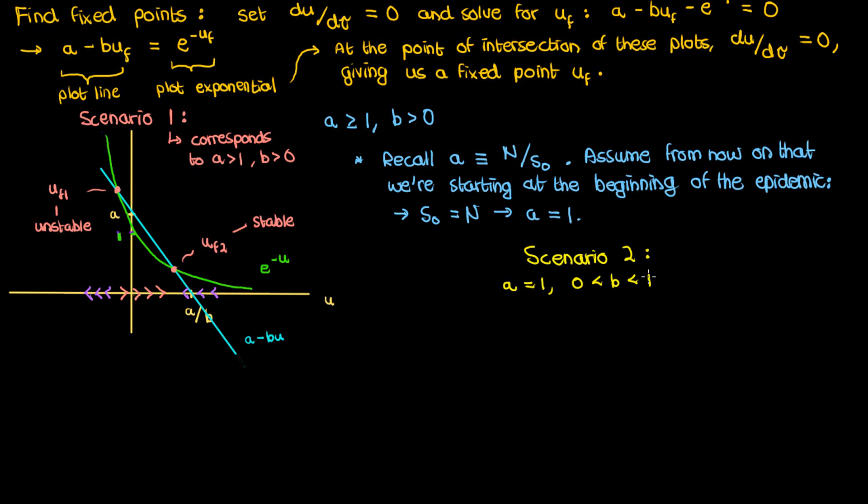The second scenario that I'm going to talk about now corresponds to a situation where a is fixed at 1 and b is less than 1 but still positive. This scenario is quite similar to my first scenario except now instead of having a negative fixed point I have a 0 fixed point uf1 and a positive fixed point that I'll call uf2.